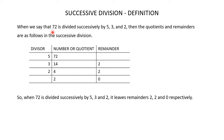Let's look at this example of number 72 being divided successively by 5, 3 and 2. So 72 is divided by 5 — you get the quotient as 14 and 2 as the remainder. But this quotient 14 becomes the dividend for the next division. So 14 is divided by 3, giving a quotient of 4 and remainder of 2.